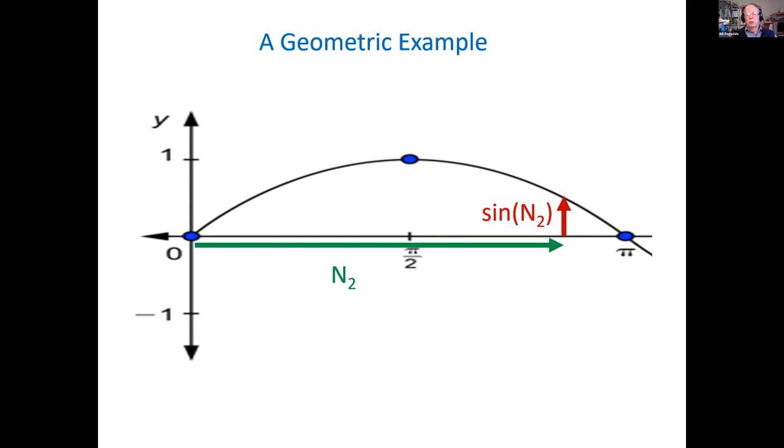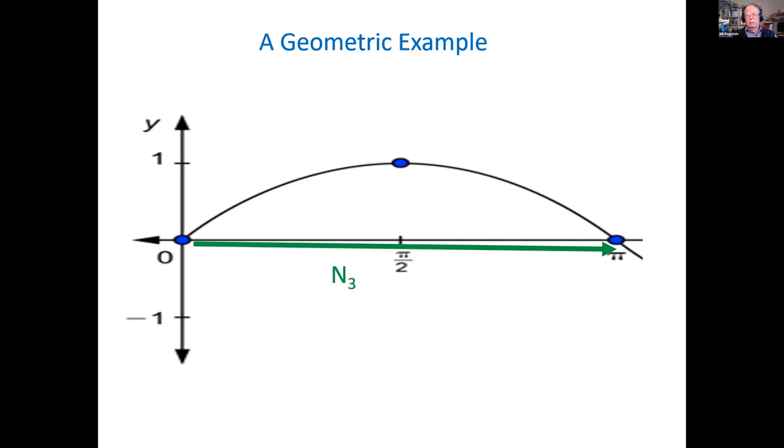Two things are happening. We're getting closer to pi, and also our error is diminishing. On this last calculation, if we add n2 and the sine of n2, bingo, we reach pi.